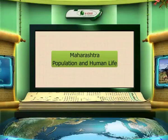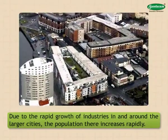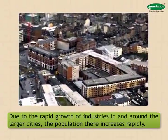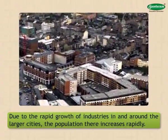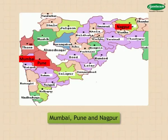The distribution of rainfall in Maharashtra is uneven. Moreover, rainfall is irregular, and many times this has an adverse effect on agriculture in Maharashtra. Maharashtra population and human life — population: due to the rapid growth of industries in and around larger cities, the population there increases rapidly. Examples of such cities are Mumbai, Pune, and Nagpur. Population is also higher in the fertile tracts of river basins. This image shows the distribution of population in Maharashtra.